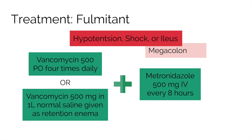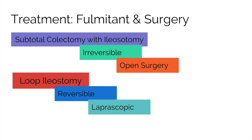Treatment of fulminant episodes, previously characterized as severe complicated infections, begins with oral vancomycin 500 mg four times per day. If there is an ileus present, vancomycin 500 mg is placed in one liter of normal saline and administered rectally as a retention enema. In addition, IV metronidazole should also be used at 500 mg every eight hours. If someone develops a megacolon, surgery is likely the treatment of choice, as antibiotics may not have time to work before a colonic perforation occurs.